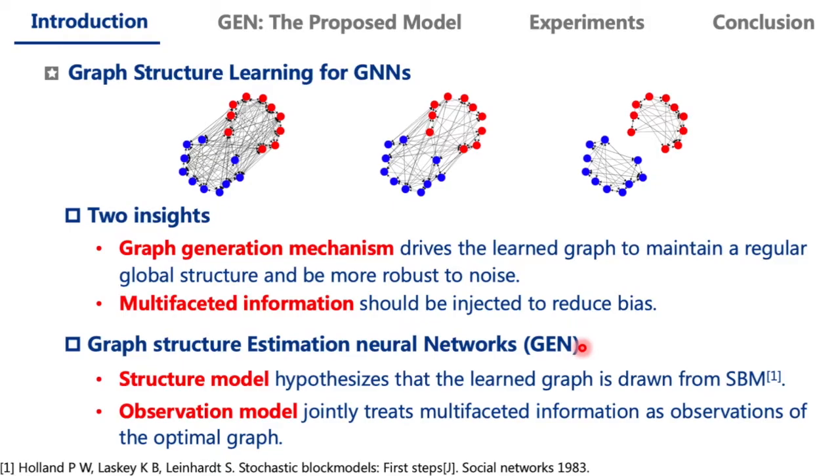GEN is mainly composed of two key modules: structure model and observation model. Considering the local-smoothing nature of GCN, we attach a structure model to the graph generation, hypothesizing that the estimation graph is drawn from SBM. So this graph has a strong community structure, just like the graph on the right.